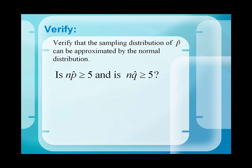Now, we have to verify that the sampling distribution of p-hat can be approximated by the normal distribution. So, we need to ask, is n times p-hat greater than or equal to 5, and is n times q-hat greater than or equal to 5?